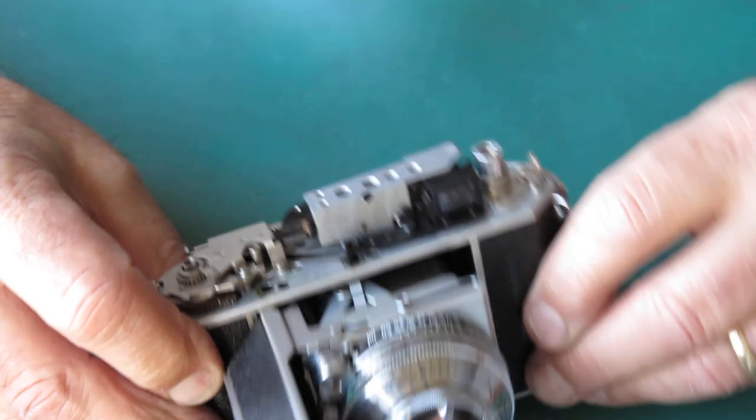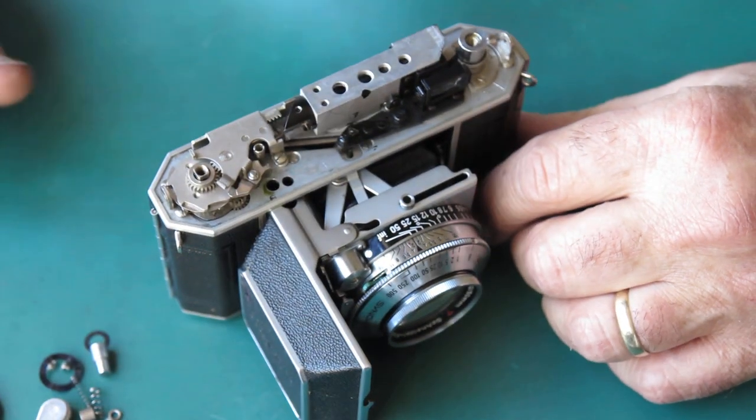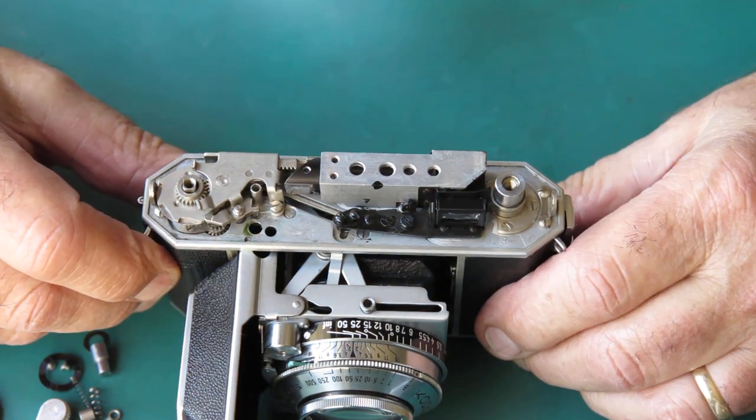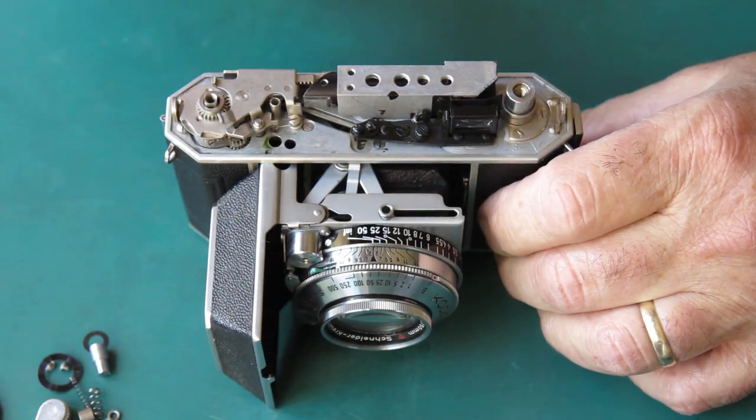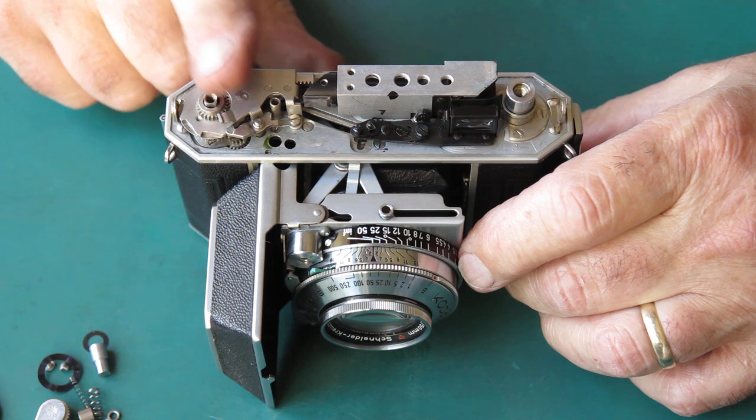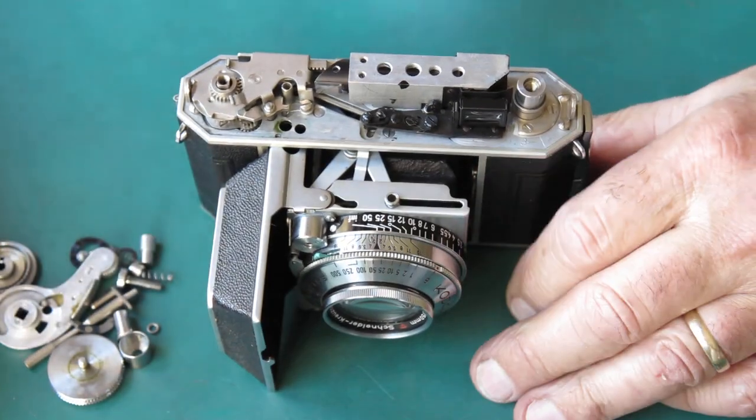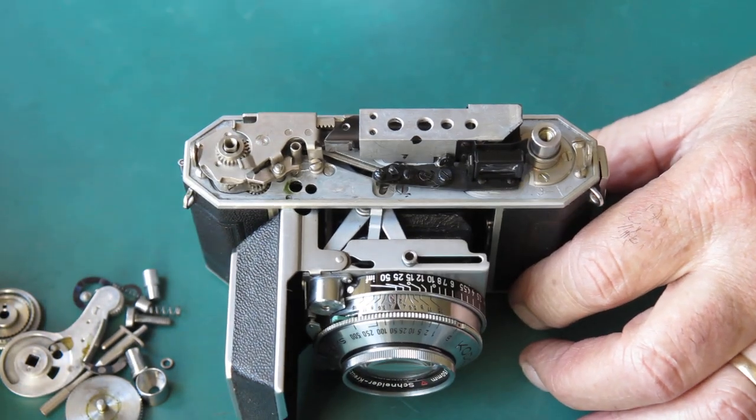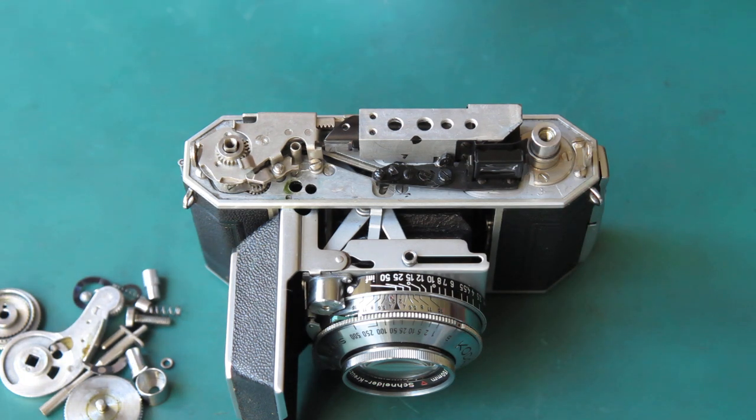I'm interested to see if the camera actually functions. So I'm going to take the shutter out, reassemble this film advance, put all this other stuff back in there so we've got a complete camera, put the shutter back in, and then give the camera a good check over and see exactly what's wrong before I strip it all completely down and service it.